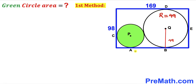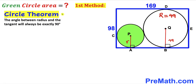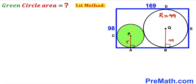Likewise, I'm going to connect the point of tangency A and center P. We can see that AP is the radius of the green shaded circle; this unknown radius I'll label as lowercase r. Now let's recall the circle theorem: the angle between the radius and the tangent line is always exactly 90 degrees, so these angles are each 90 degrees since these are radii and this is our tangent line.